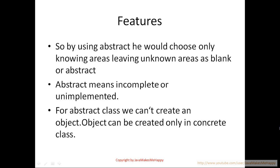By using abstract, you choose only known areas, leaving unknown areas blank — as abstract. If you are using an abstract class, you choose only known areas. If a user provides a rectangle parameter, then you will provide the shape. If a user provides the color of the rectangle, then you will draw the rectangle — you have to get proper input to give proper output. Abstract means incomplete or unimplemented. It's just declared, just defined — not implemented. Abstract can't be fully implemented; it's incomplete.